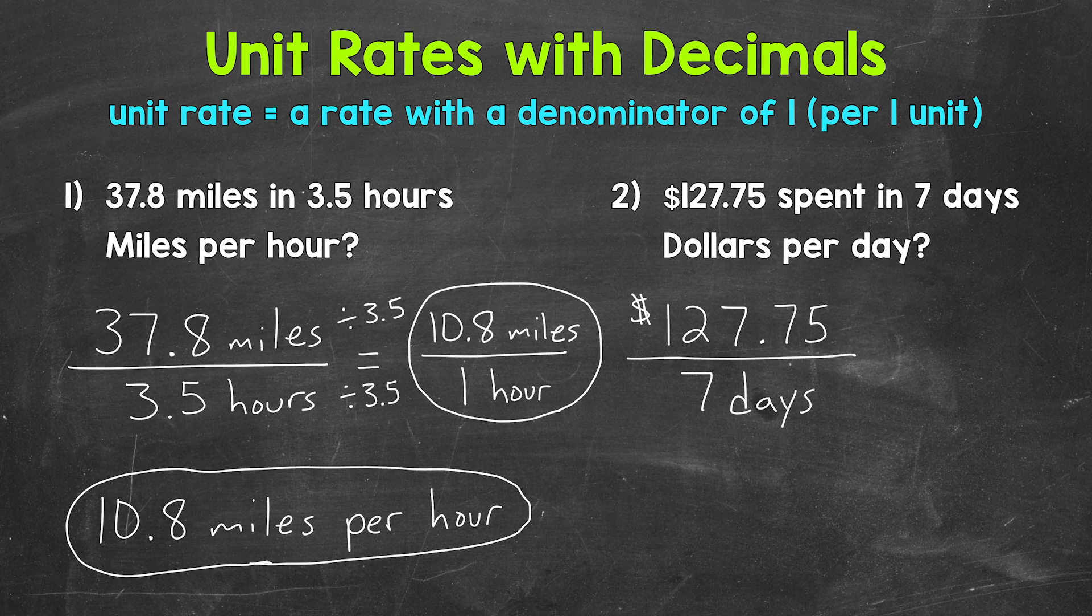So now we need that unit rate. We need that denominator of 1. We get a denominator of 1 by dividing by 7. 7 divided by 7 gives us 1. Whatever we do to the bottom, we must do to the top in order to keep this equivalent and proportional. So let's divide both of these by 7.